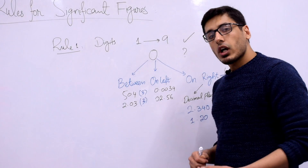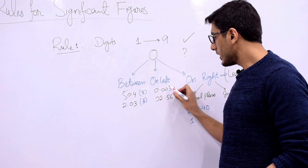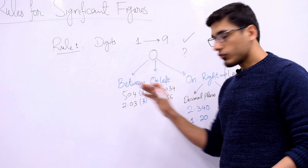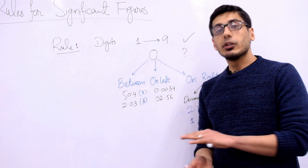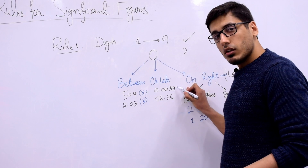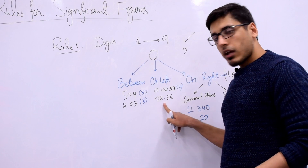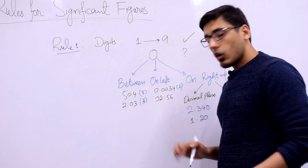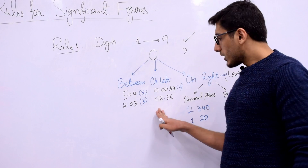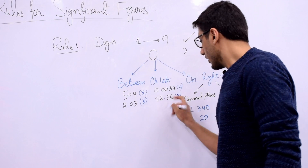Now, if zero comes on the left of the significant figures — for example, you know from the rule above that 3 and 4 are significant in this reading — but since zero is coming on the left side of these two significant figures, the rule says they will not be significant. So following this rule, the number of significant figures in that reading is 2. Similarly, in another reading where zero is again on the left side, the final number of significant figures will be 3: digits 2, 5, and 6.